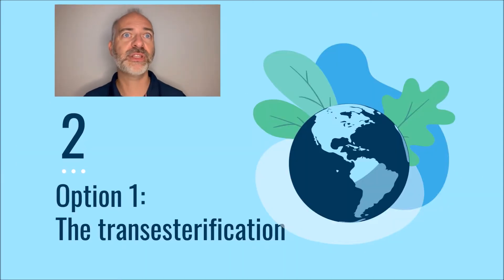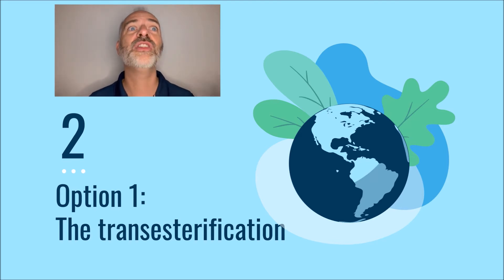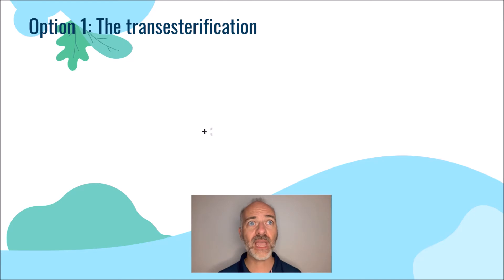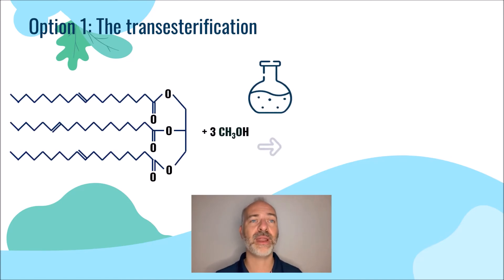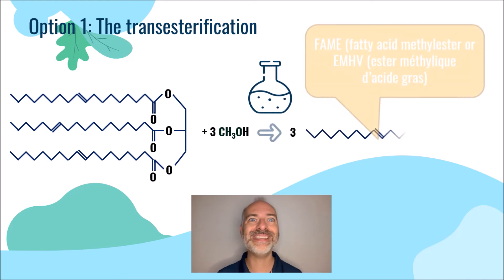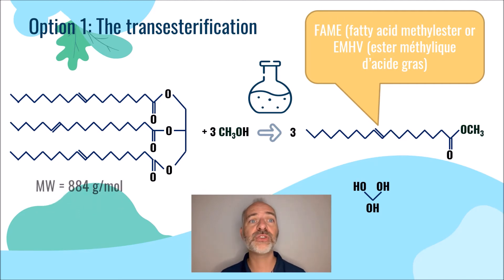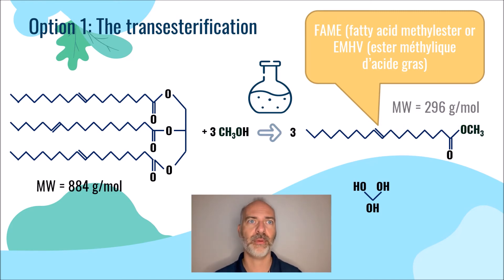The first method consists in letting a triglyceride molecule react with 3 methanol molecules to produce an ester, often called FAME for Fatty Acid Methyl Ester. This chemical reaction involves 3 methanol molecules that will react with a triglyceride molecule to form 3 methyl ester molecules. We therefore transform a molecule with a molecular weight of about 900 grams per mole into 3 molecules of molecular weight less than 300 grams per mole.